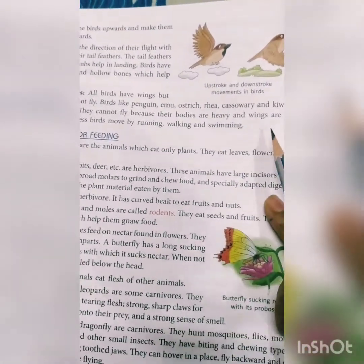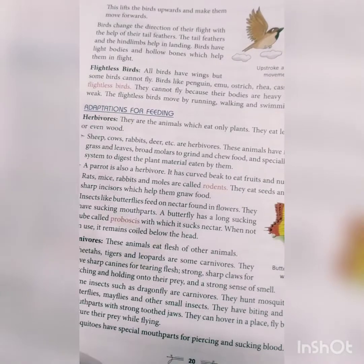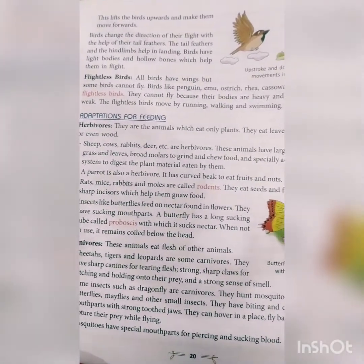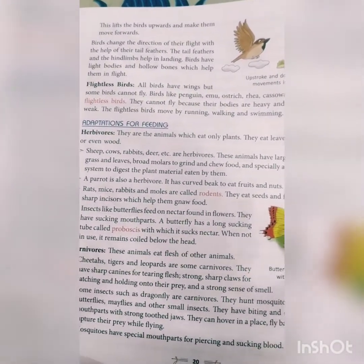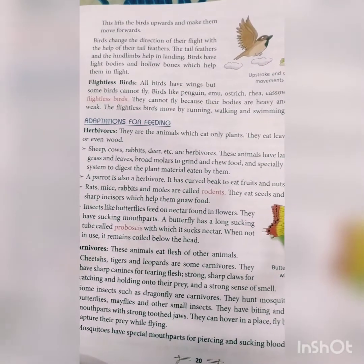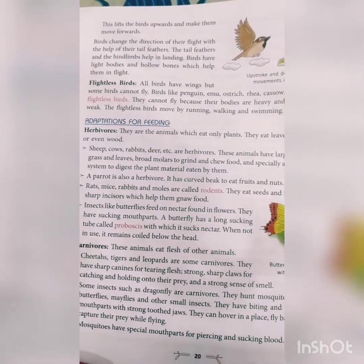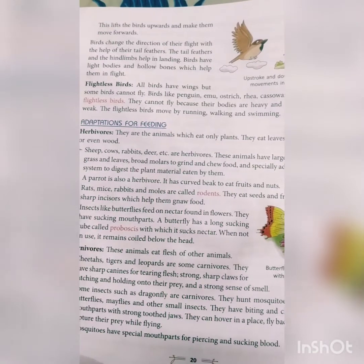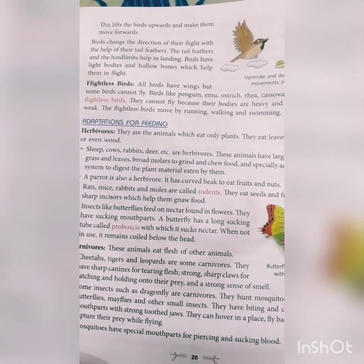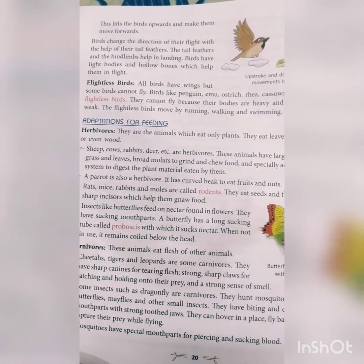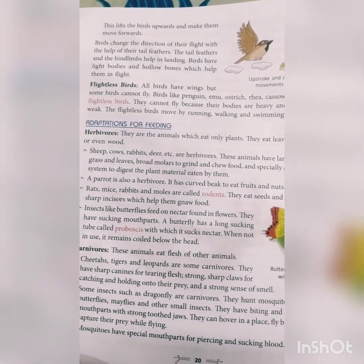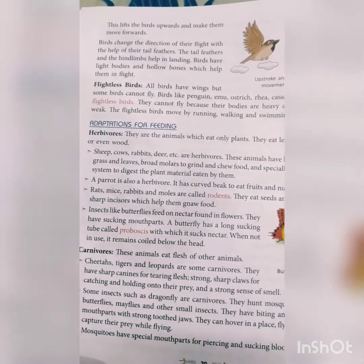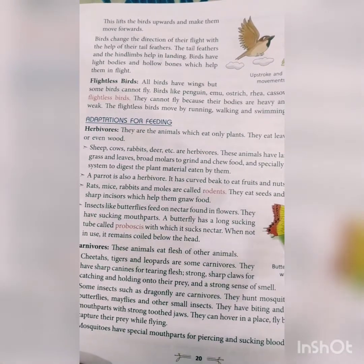Some birds are not able to fly and these birds are called flightless birds. They cannot fly because of their heavy body or small wings. Examples include penguin, emu, ostrich, cassowary, and kiwi. These birds move by running, walking, or swimming.